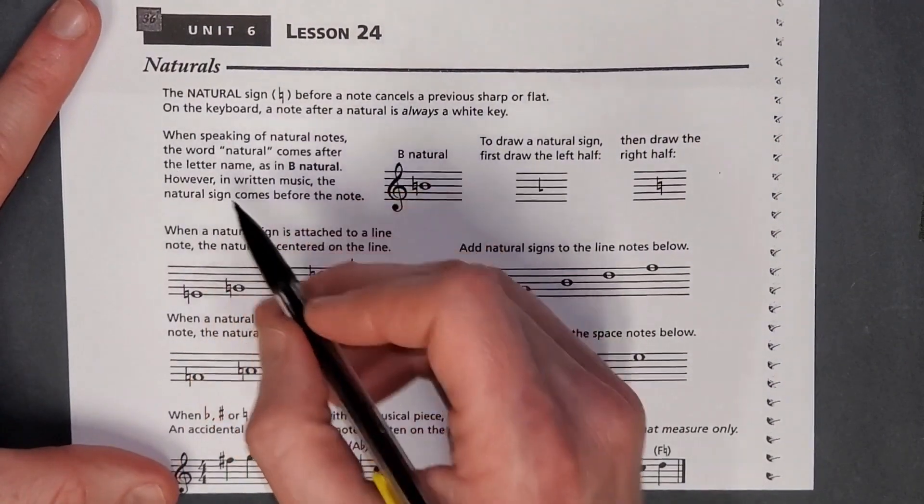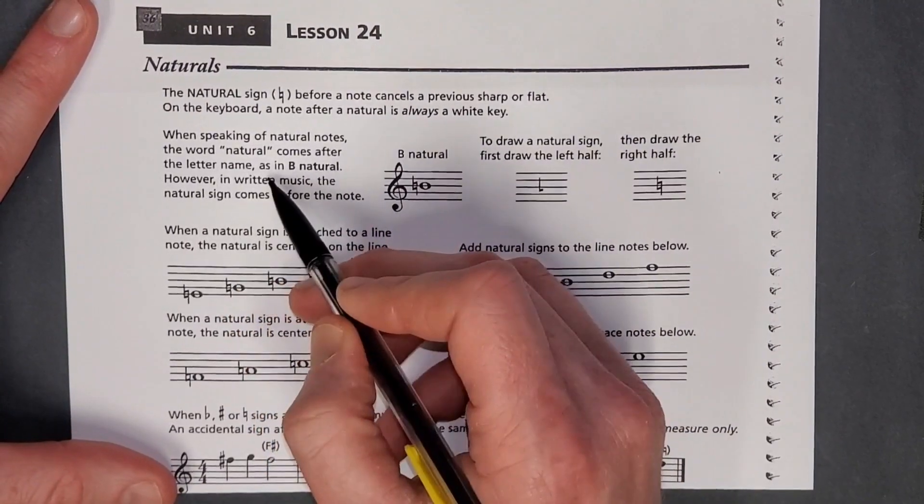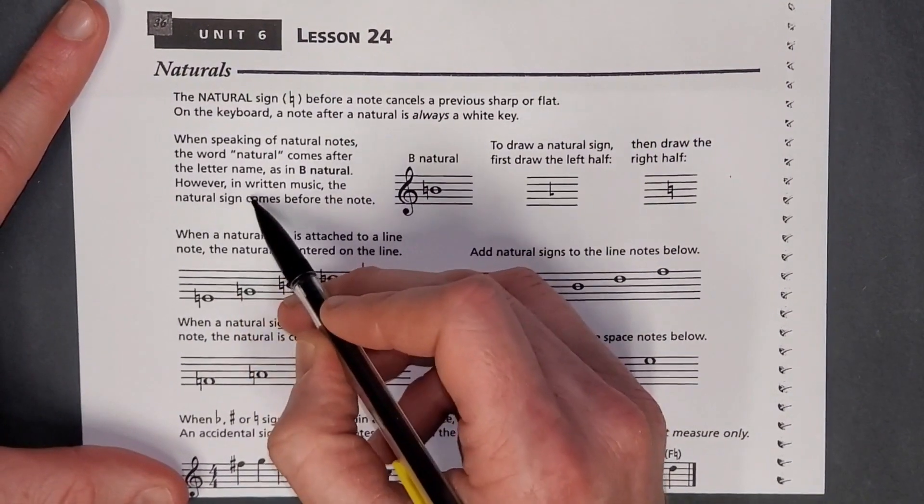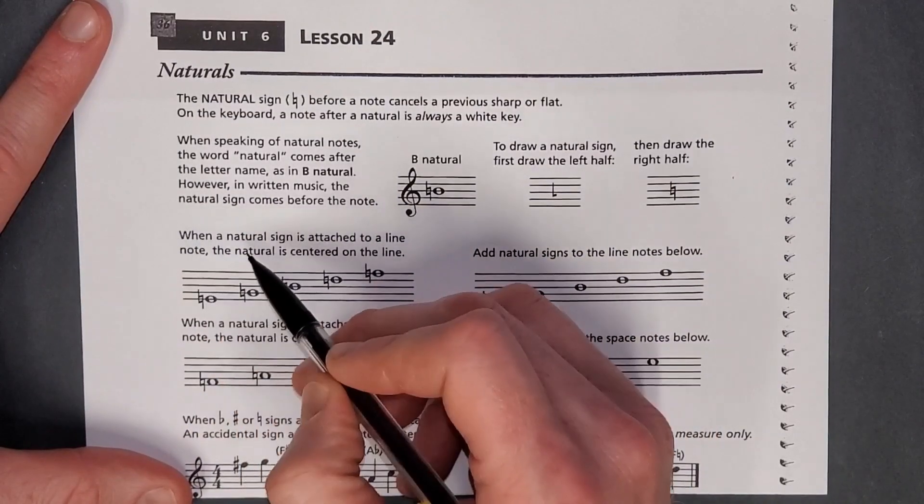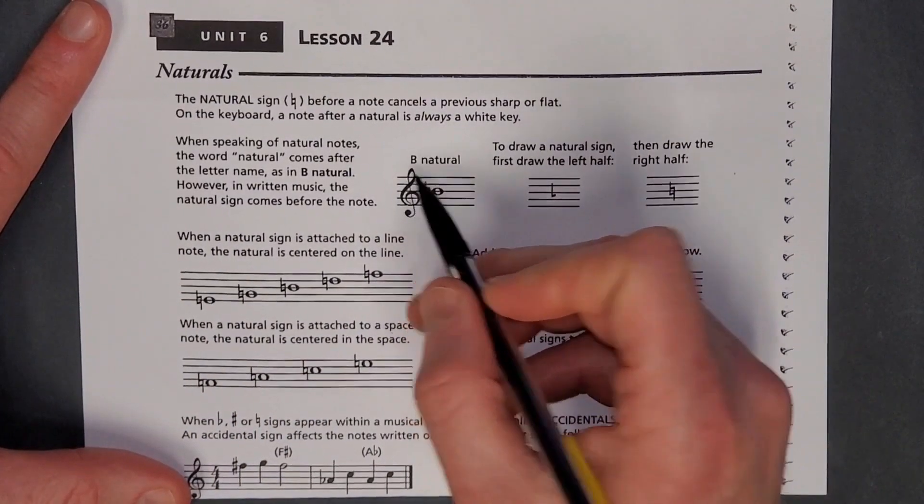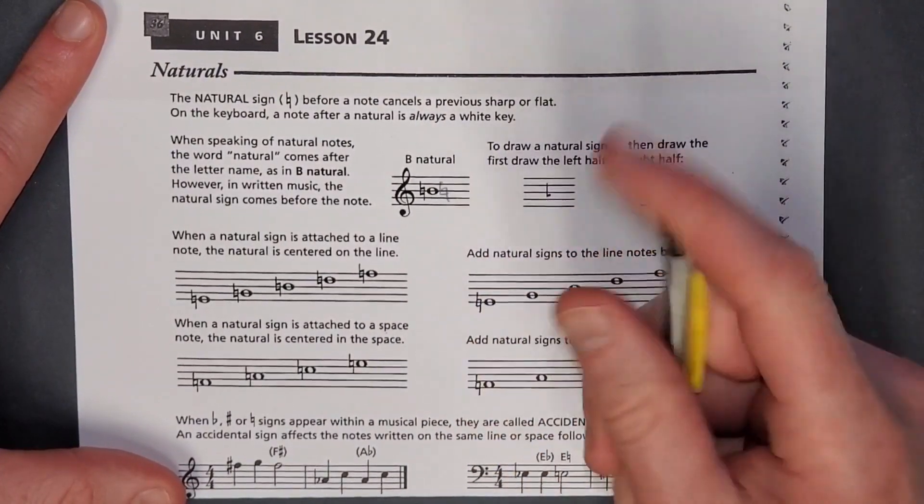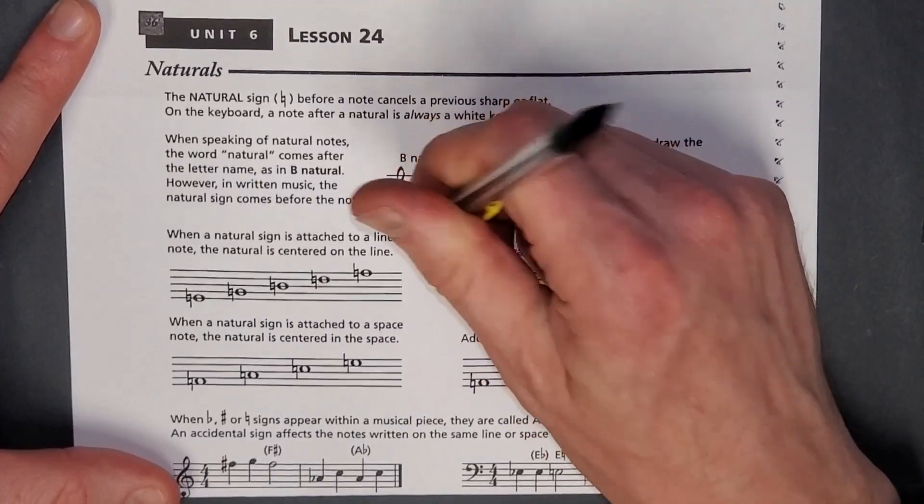When speaking of natural notes, the word natural comes after the letter name as in B natural. However, in written music, the natural sign comes before the note. This is a common thing that people do. They think B natural, so they write the B and then they put the natural after the B, but it comes before the B.